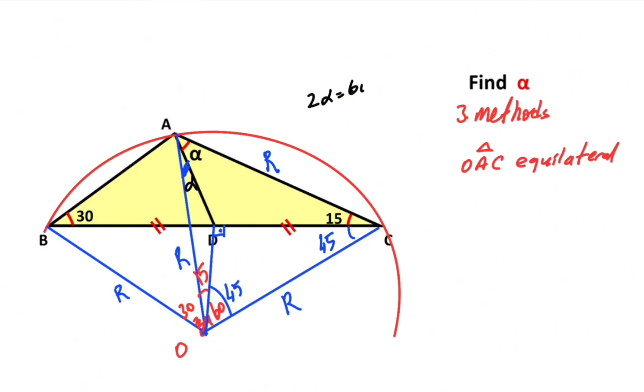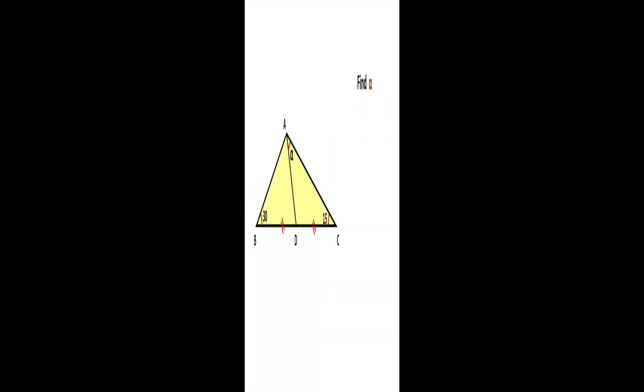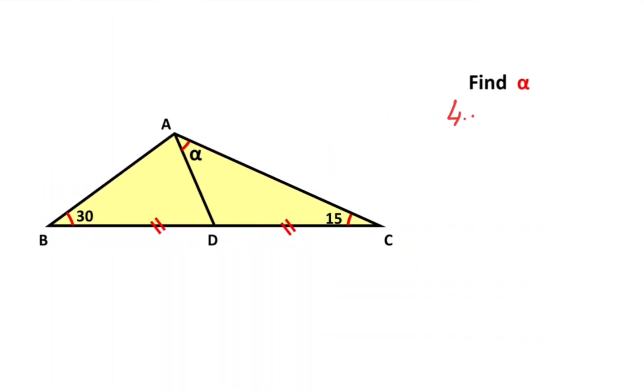That means alpha is going to be 30 degrees. Now let's calculate the value of alpha using the fourth method.